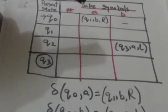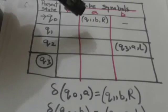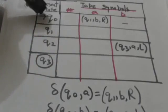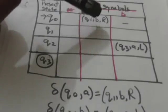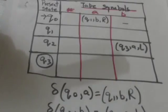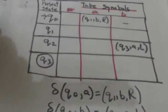The entry of the table will be the output of the transition function for the state which has labeled the row of that entry and the tape symbol which has labeled the column of that entry.